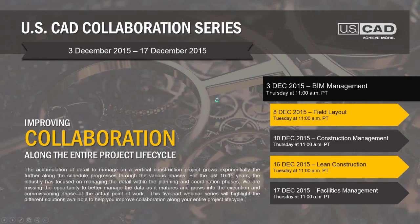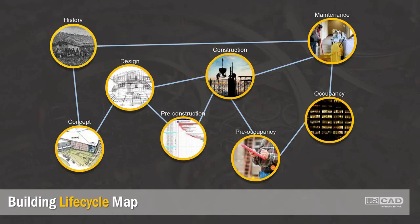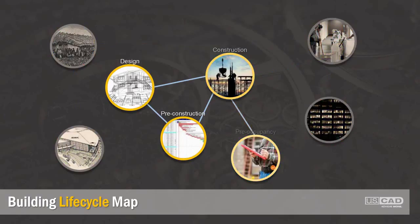If you look at the map of a lifecycle of a building — from the historic progression and what we learned through maintenance, through design concept, formal design, pre-construction, construction, and on into occupancy — the map would look something like this. For today's discussion, while we have solutions that cover pretty much all of these stages, we're going to cover three stages in the middle, leaning a little towards the pre-occupancy side on the right.